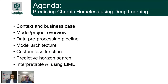I'm going to walk you through a deep learning model we just launched in late August out of our lab, aimed at tackling the problem of chronic homelessness here in our city. This utilized tabular data from our homeless shelter information management system. I'll walk you through some context, a general overview, our pre-processing pipeline, model architecture, custom loss function, predictive horizon, and interpretable AI using LIME.